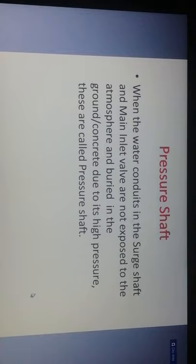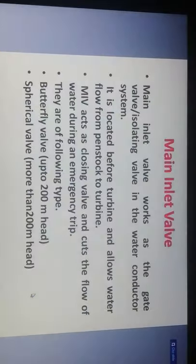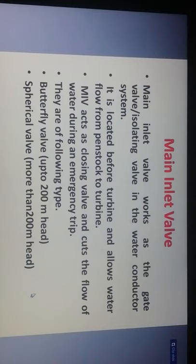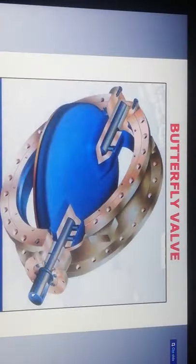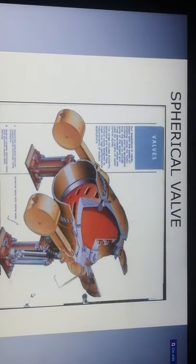A pressure shaft is where water conduits are not exposed to the atmosphere and are buried in the ground or concrete due to high pressure. The main inlet valve works as a gate wall and isolating valve in the water conductor system. It is located before the turbine and allows water flow from the penstock to the turbine. The main inlet valve acts as a closing valve and cuts the flow of water during emergency. Types include butterfly valve for up to 200 meter head and spherical valve for more than 200 meter head.